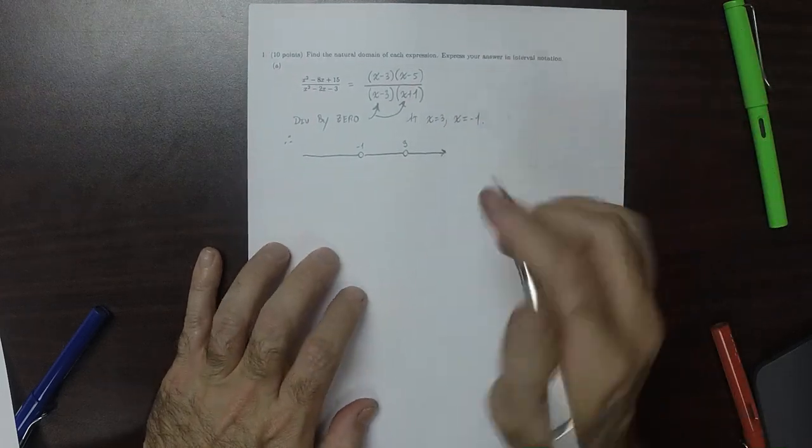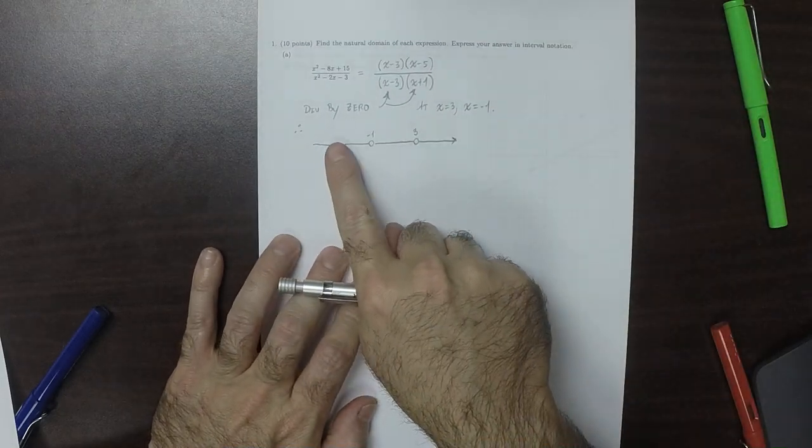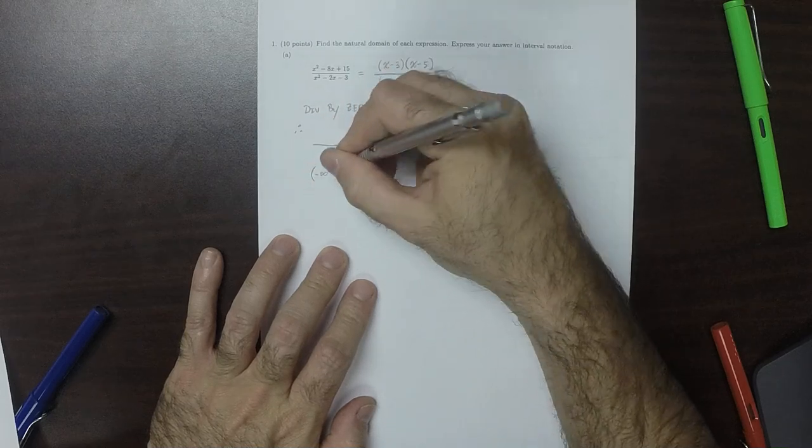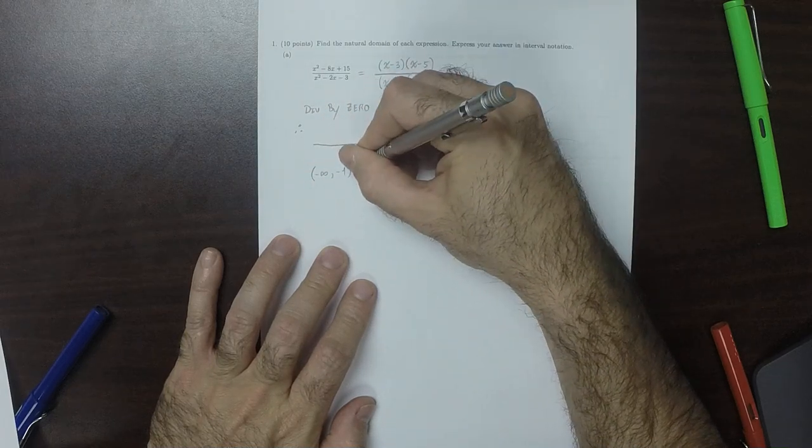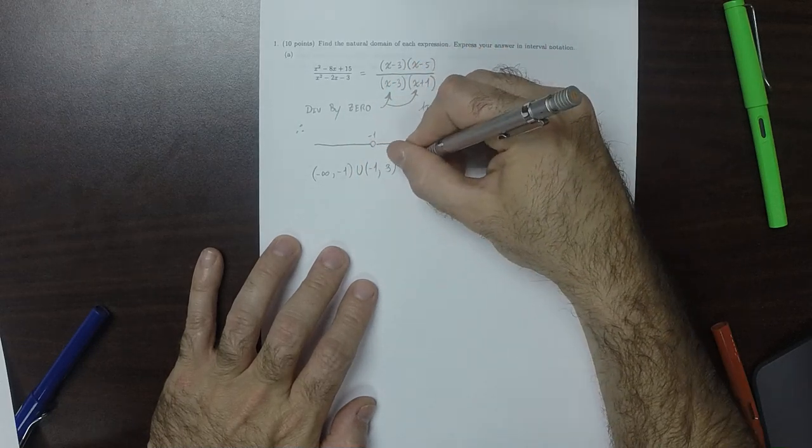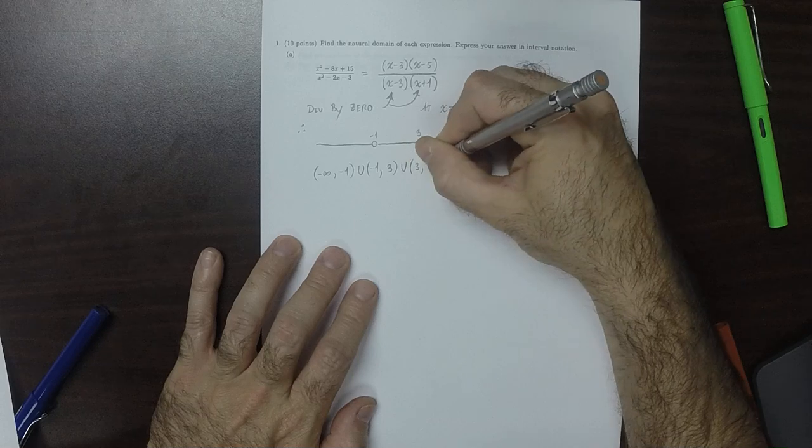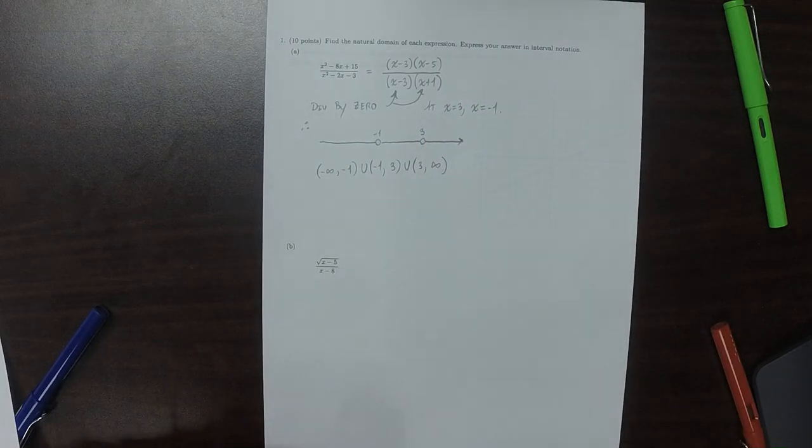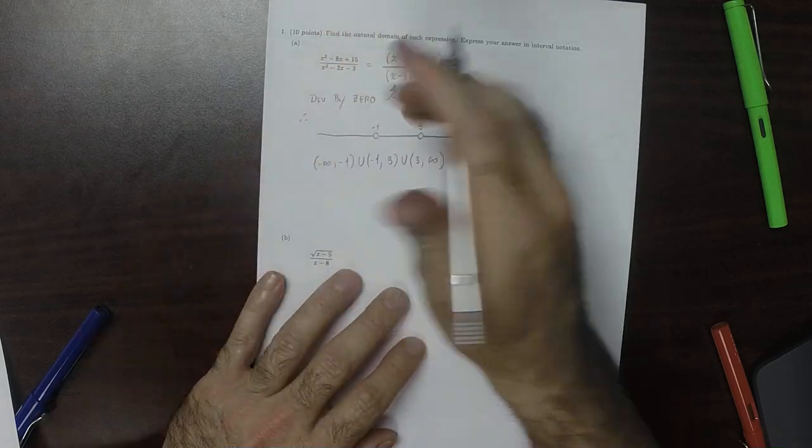It says express your answer in interval notation. So it'll be three intervals: negative infinity to negative 1, union negative 1 to 3, union 3 to infinity. That's the answer.